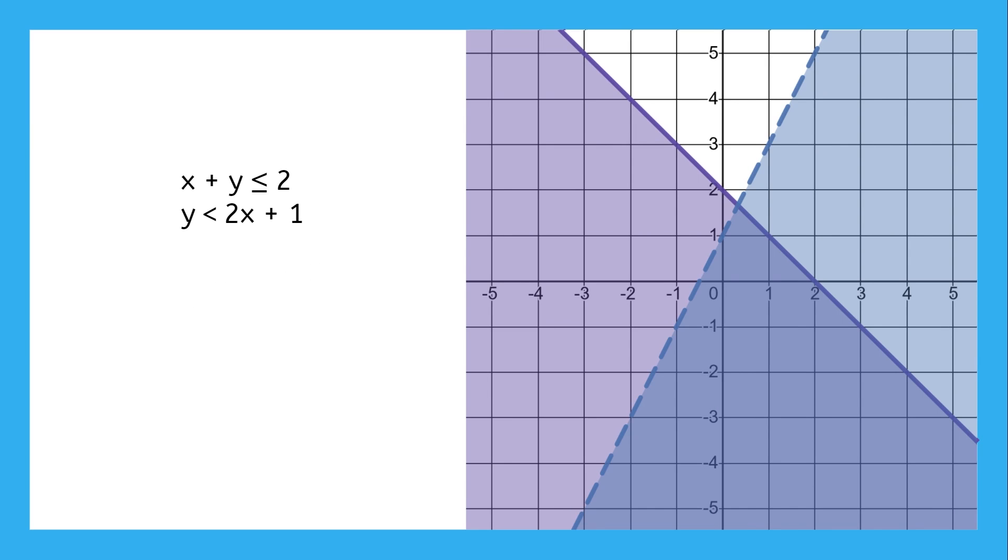Here's our system graphed, so what solutions do you see? (1, -1) is a solution, or (0, -3), or we can even find solutions on the solid line at the edge of the solution area, like (4, -2).